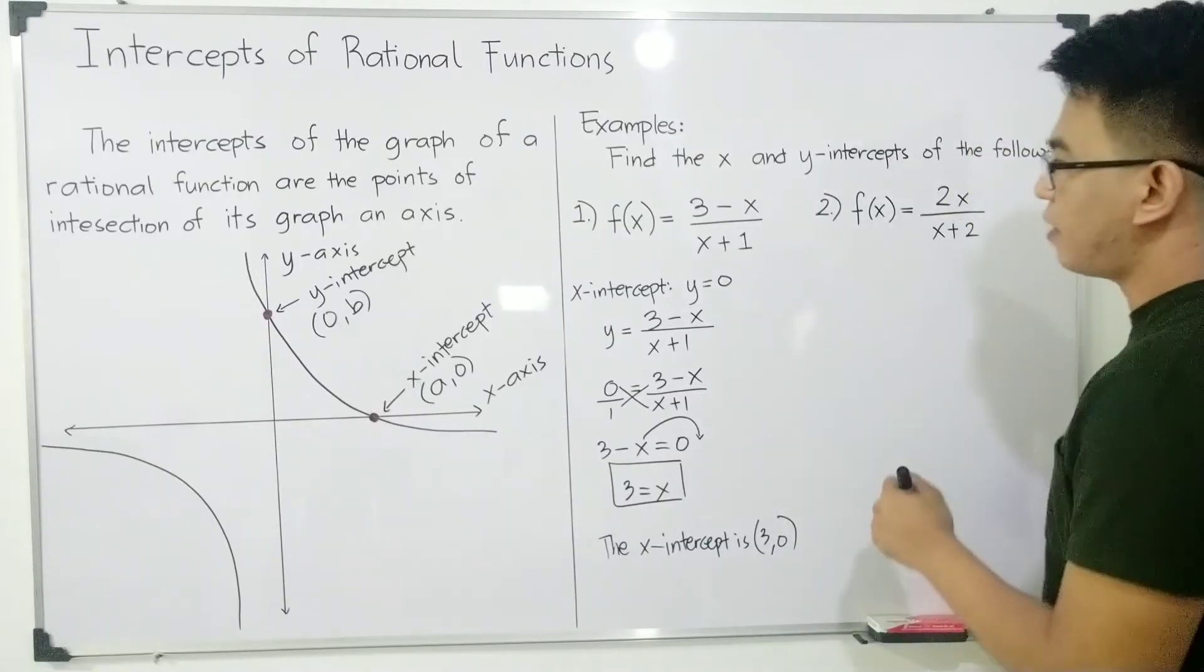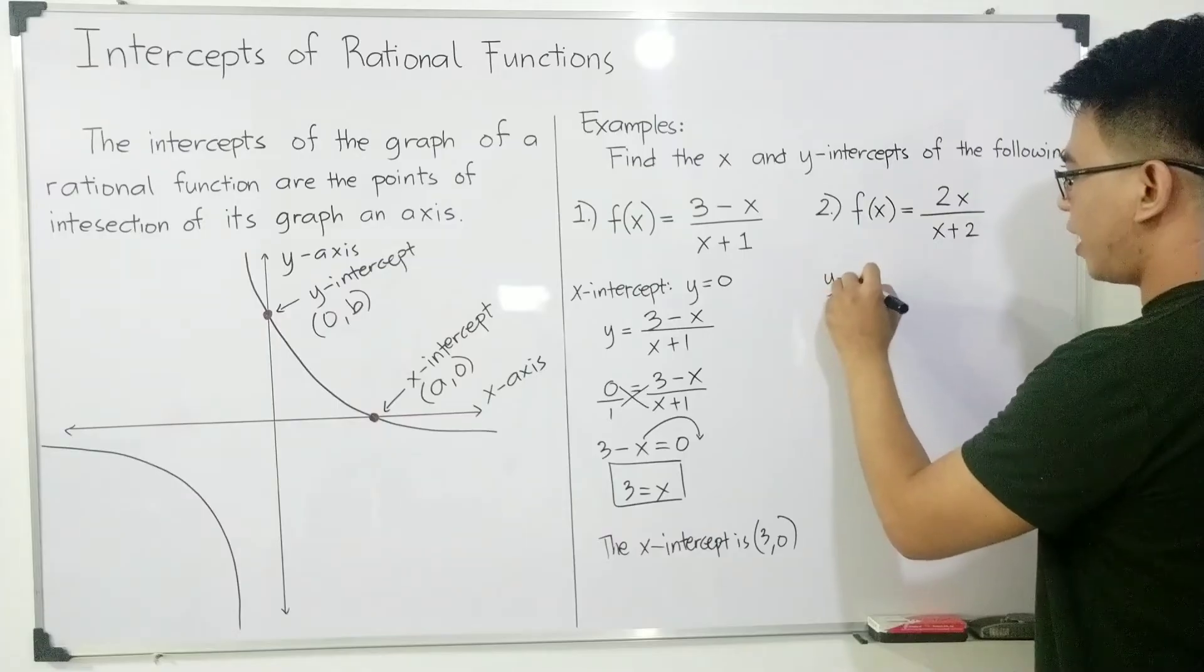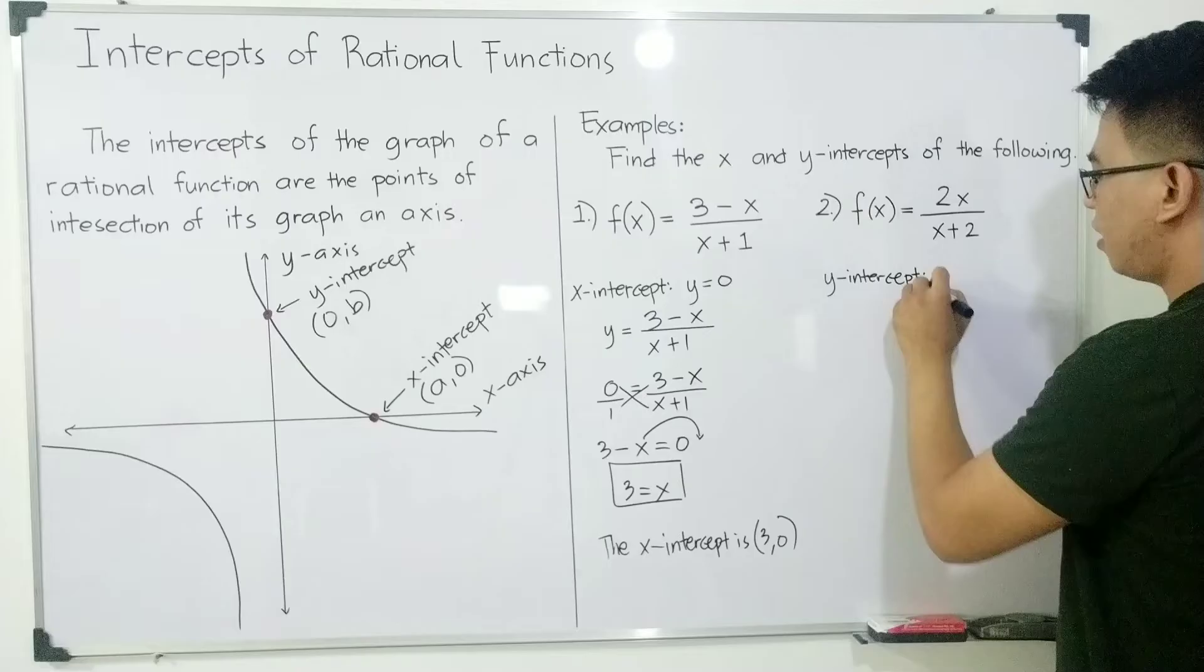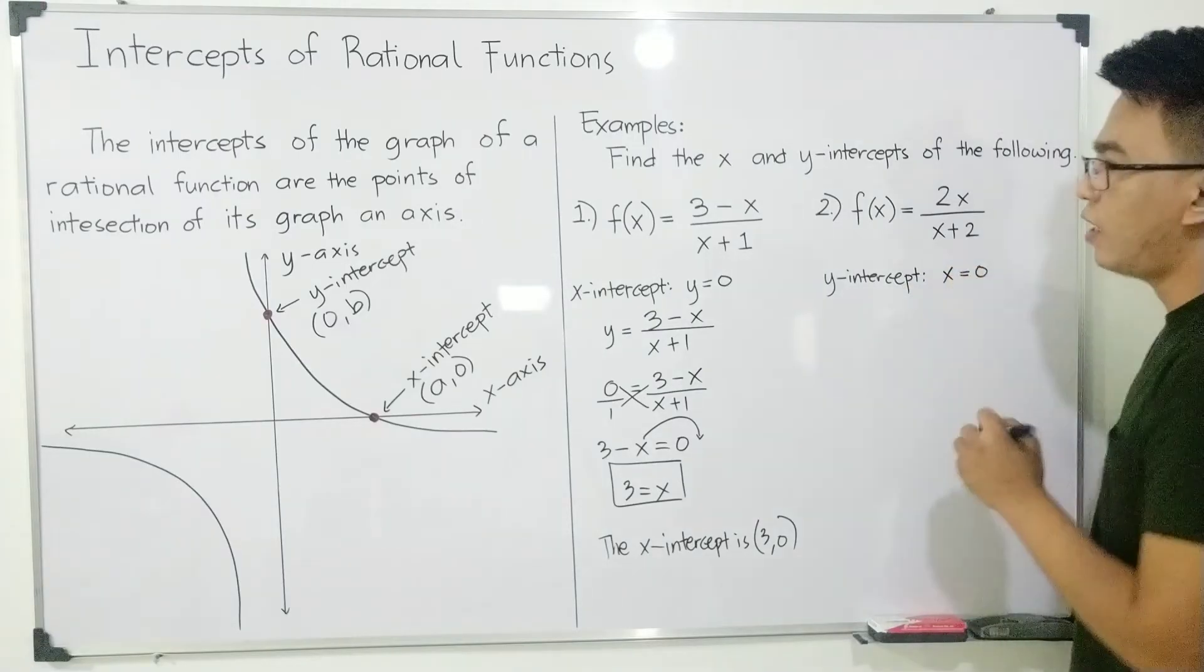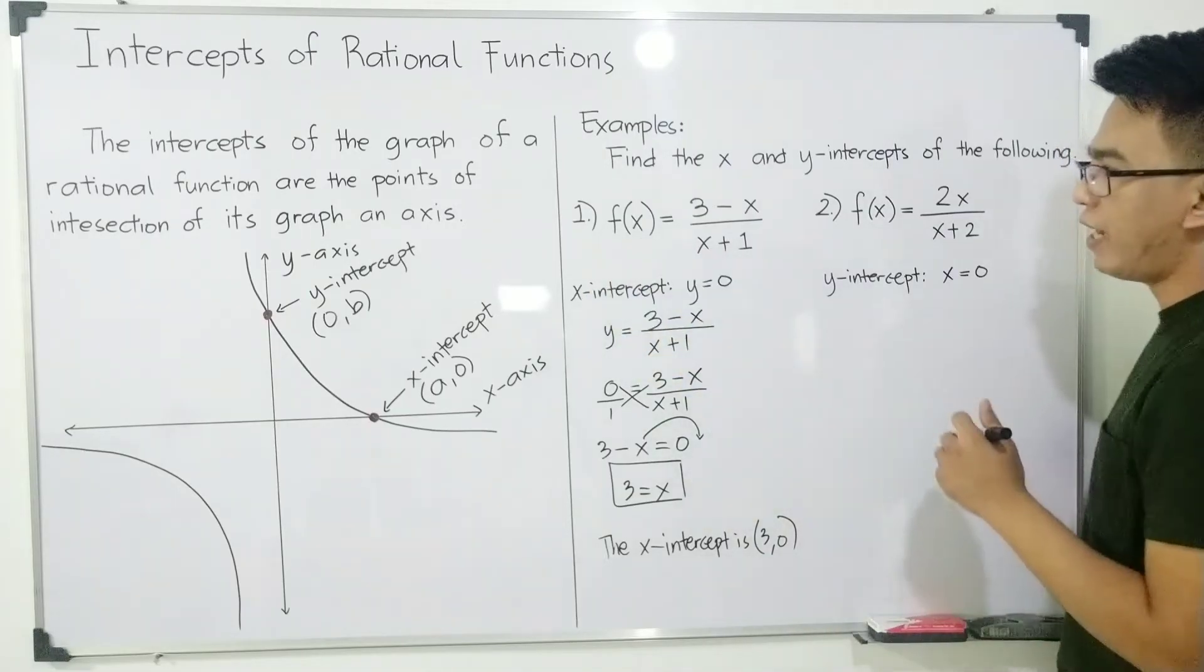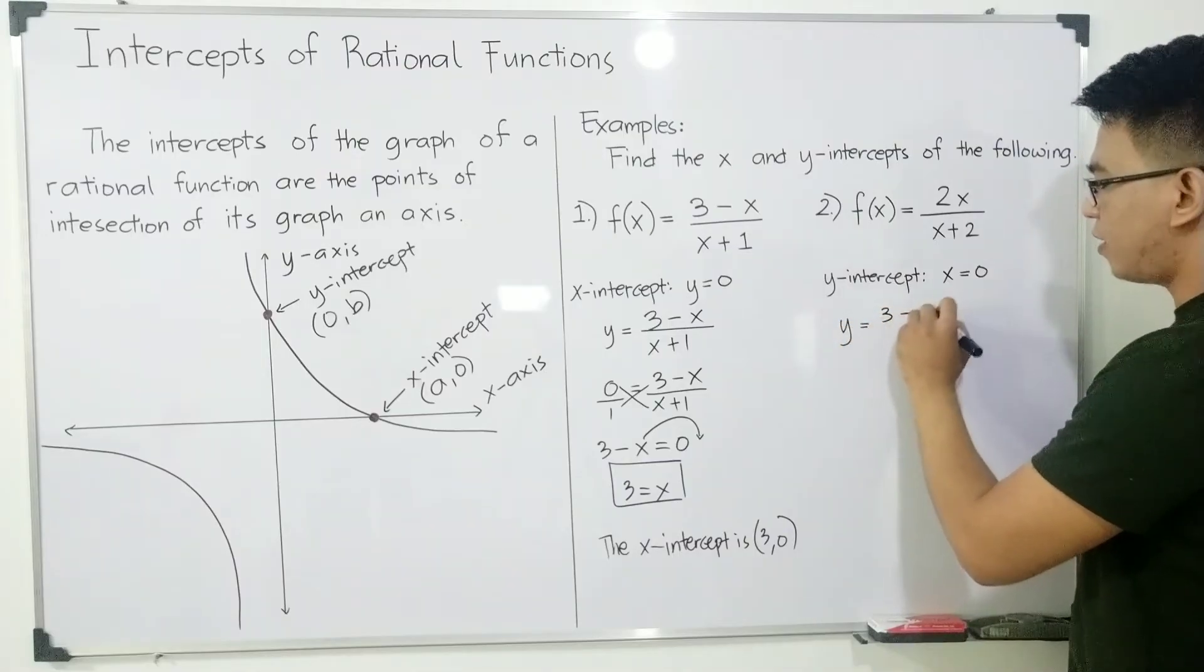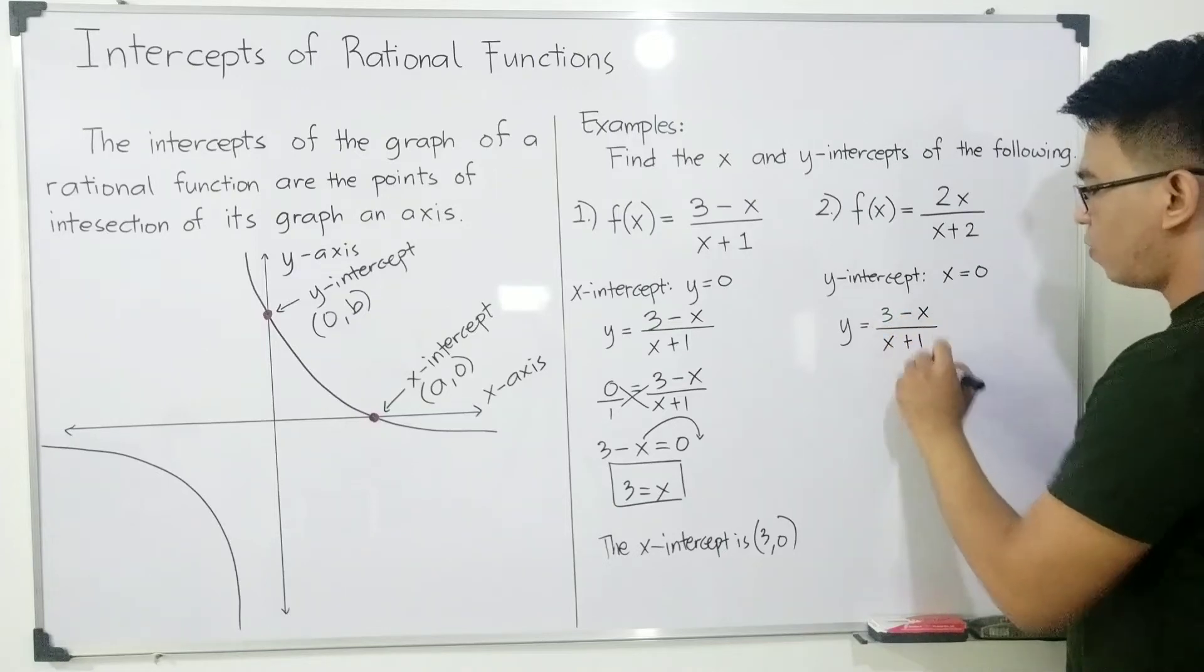Now, how about the y-intercept? As for the y-intercept, your x is equal to 0. Again, given this function, we will replace f(x) by y. So you have y = (3-x)/(x+1).